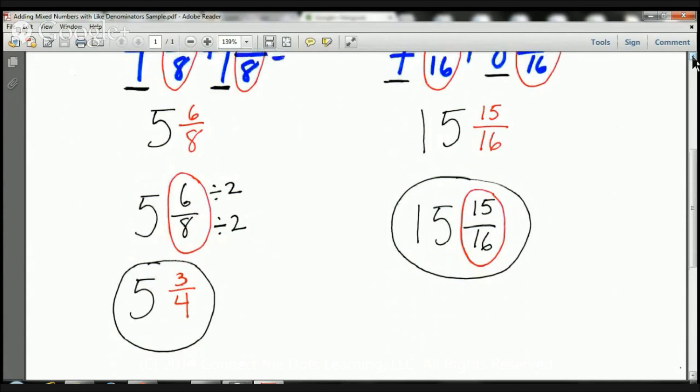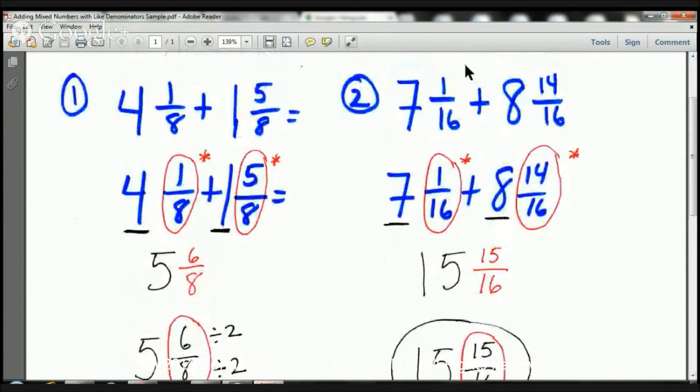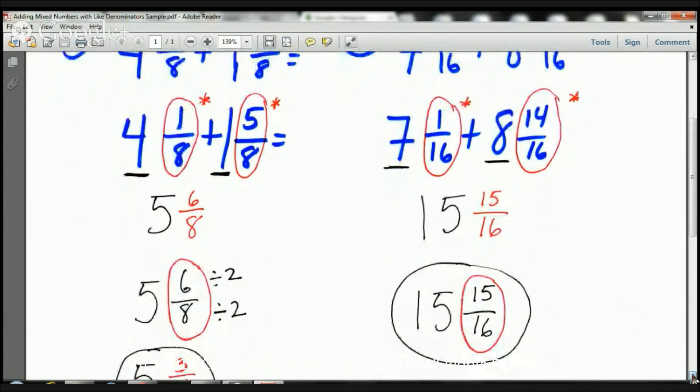Let's take a look at the next example. The next example I've got 7 and 1 sixteenth plus 8 and 14 sixteenths. Remember I have to add the numbers that belong. So first I'm going to add the whole numbers. I've got a 7 and I've got an 8. 7 plus 8 is 15. 15 is my whole number.